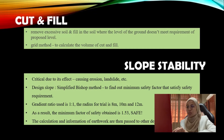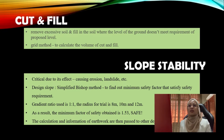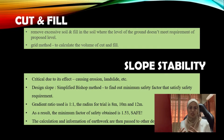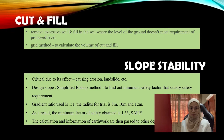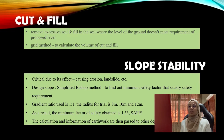Cut and fill is the removal of excessive soil and filling in soil where the ground level does not meet the requirement of the proposed level. They use the grid method to calculate the volume of cut and fill. For slope stability, it is critical to be done as it can cause erosion and landslide. They used the simplified Bishop method to find the minimum safety factor that satisfies safety requirements, using a gradient ratio of 1 to 1, with trial radii of 8, 10, and 12 meters. The minimum factor of safety obtained was 1.53, which is considered safe.